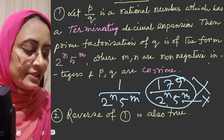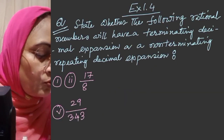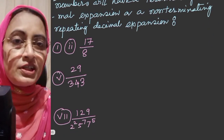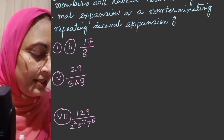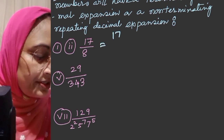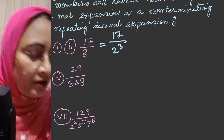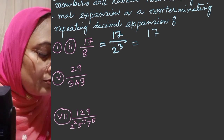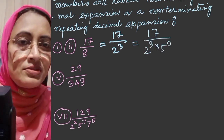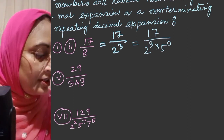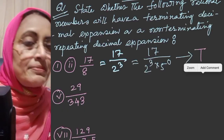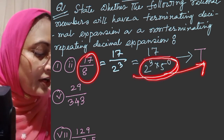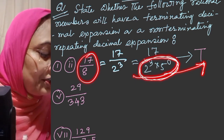Now we will do Exercise 1.4, which asks whether the following rational numbers have a terminating or non-terminating decimal expansion. First: 17 by 8. This equals 17 by 2 cubed. There is no 5, but we can write it as 17 by 2 cubed into 5 to the power 0, since non-negative integers include 0. So the denominator is in the form 2 to the power 3 into 5 to the power 0. Therefore, 17 by 8 has a terminating decimal expansion, and it terminates after 3 decimal places.